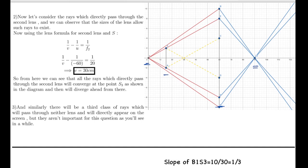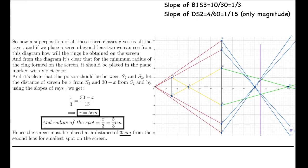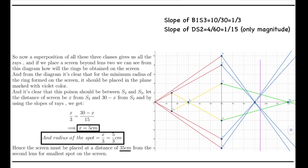There is also a third class of rays which pass through neither lens and appear directly on the screen, but they aren't important for this question, so we'll neglect them. Now considering the superposition of all three classes of rays, if we place a screen beyond lens 2, we can see from the diagram how the rings will be obtained on the screen.